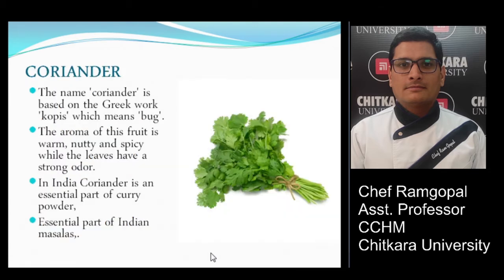Coriander is a very common herb used in Indian, continental, and Mediterranean cuisines. Also known as cilantro or dhania in Hindi, the name coriander is based on the Greek word 'koris' meaning bug. The aroma of the fruit is warm, nutty, and spicy, while the leaves have a strong odor. In India, coriander is an essential part of curry powder and Indian masalas. It is used for garnishing, flavoring dishes, and enhancing medicinal properties.